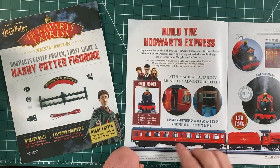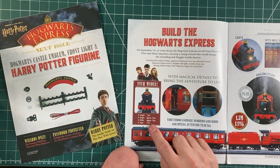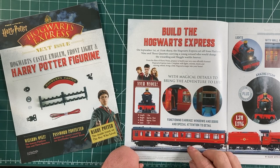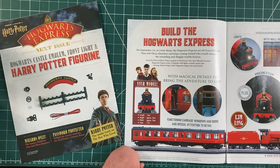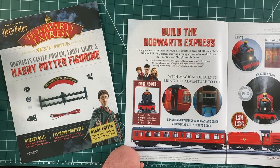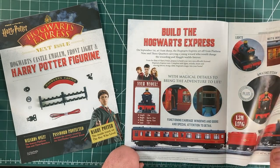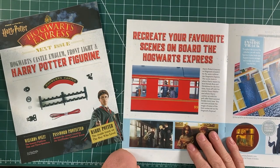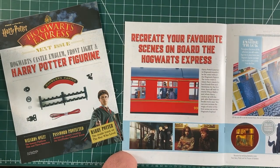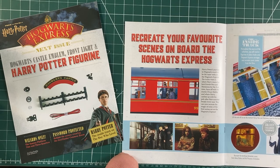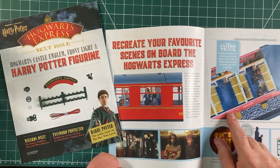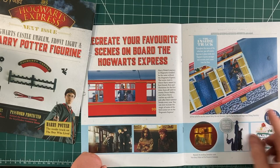The actual model is 1.3 metres, 15 centimetres high, and the width is 15 centimetres. And the scale is 1:32. Re-create your favourite scenes on board the Hogwarts Express. You can take the roof, lift the roof off and then have a look inside.